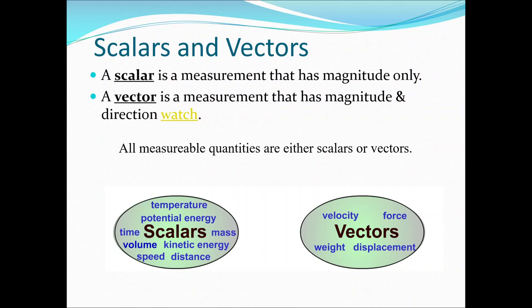Displacement is the vector equivalent of distance — it's got a completely different name. Weight and force are also vectors: if you're standing on the edge of a cliff and I apply a 20 newton force to you, you're very interested in which direction that force is in. Weight has a direction — downwards — so it must be a vector. Acceleration should also appear under vectors, though technically it can be calculated using scalars as change in speed divided by time, or as a vector using change in velocity divided by time. For exam purposes, acceleration is a vector.